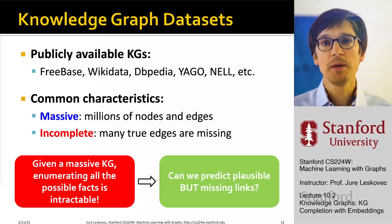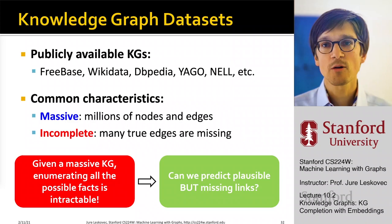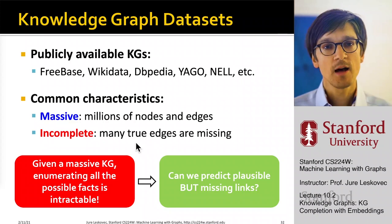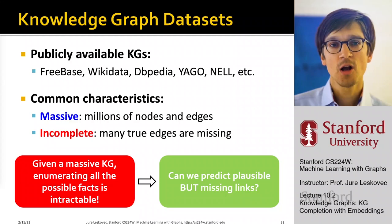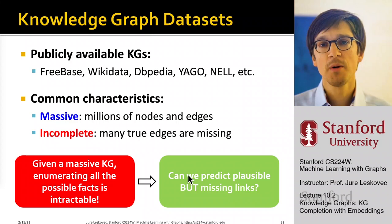One common characteristic of these knowledge graphs is that they are massive — they have millions or tens of millions of nodes and edges — but they are also notoriously incomplete, meaning many relationships are missing. One of the most fundamental tasks in knowledge graph research is to identify what relations are missing in the graph.